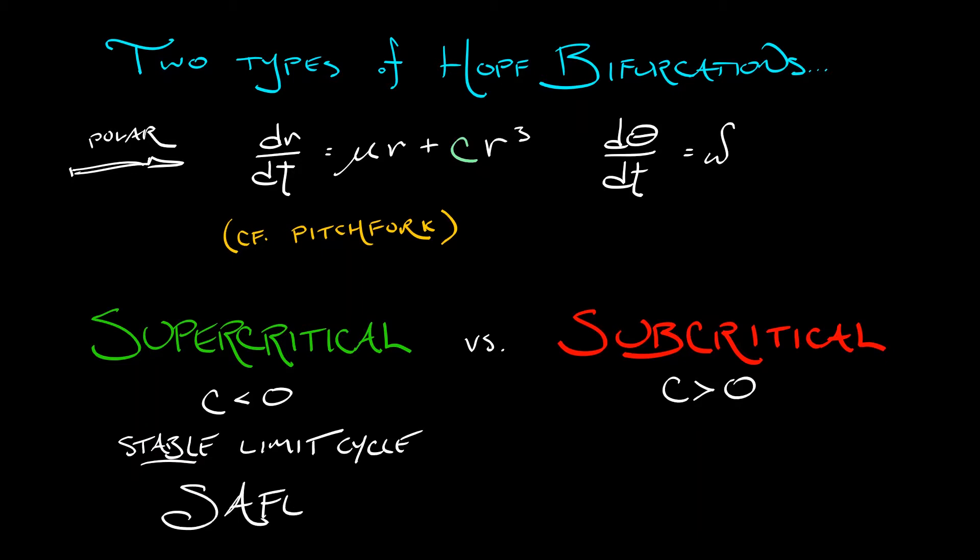In contrast, a subcritical Hopf bifurcation leads to an unstable limit cycle, and it is decidedly an unsafe situation to find yourself in. This is worth some careful contemplation.